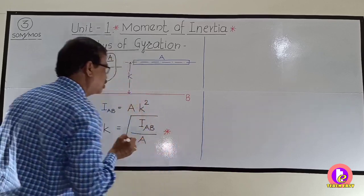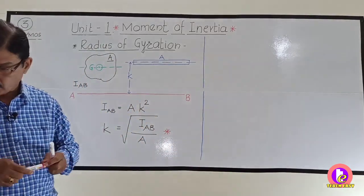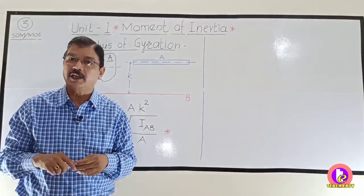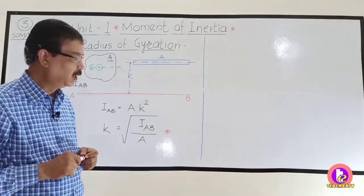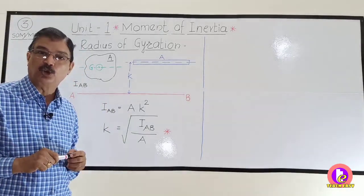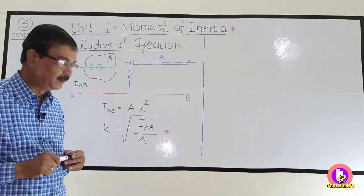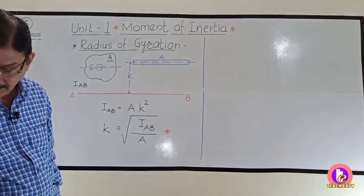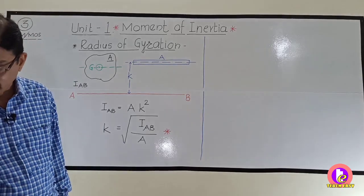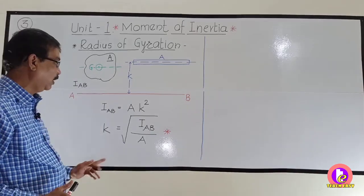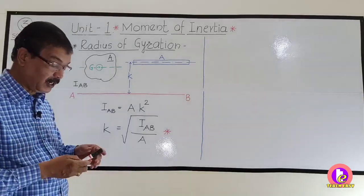This radius of gyration is very important in the case of columns which are subjected to buckling. In that case, we have to find out the slenderness ratio, which is the ratio of effective length to the minimum radius of gyration. This will decide the axis along which the column will buckle. So this is the significance of radius of gyration.